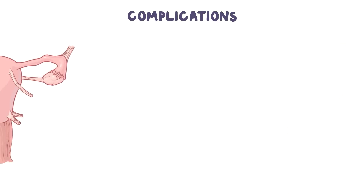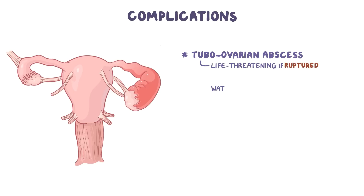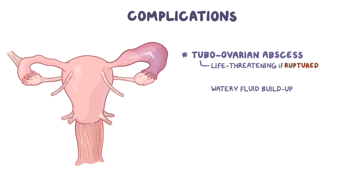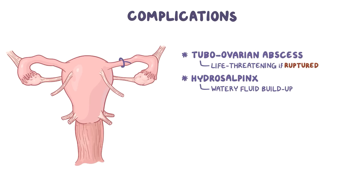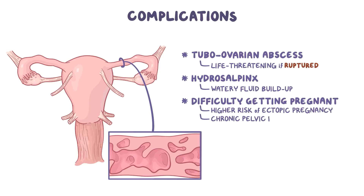This scarring in the fallopian tubes can lead to a number of complications related to PID. If pus builds up in the tube and ovary, it can turn into a tubo-ovarian abscess, which can be life-threatening if it ruptures. If a watery fluid builds up in a pocket created by scar tissue in the tubes, this is called hydrosalpinx, and it can cause the affected area to become swollen. In general, individuals who have had PID tend to have more difficulty getting pregnant, and have a higher risk of ectopic pregnancy and chronic pelvic pain.